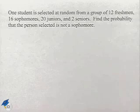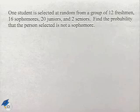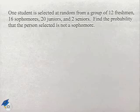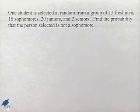Now let's work a problem where we're trying to figure out the probability of something not occurring. One student is selected at random from a group of 12 freshmen, 16 sophomores, 20 juniors, and 2 seniors. Find the probability that the person selected is not a sophomore.